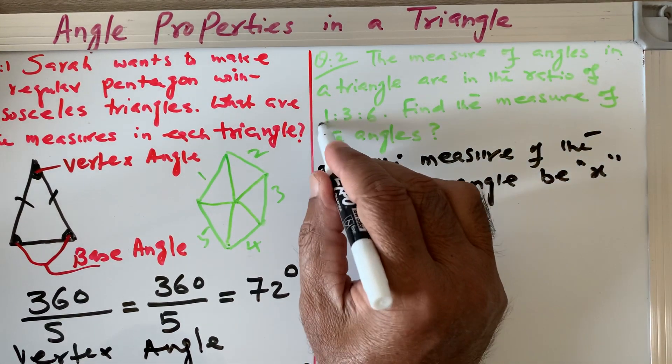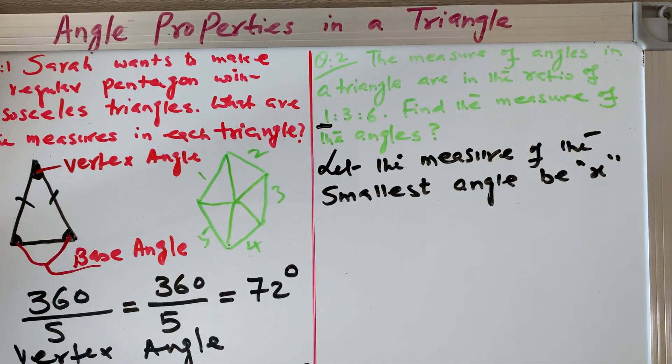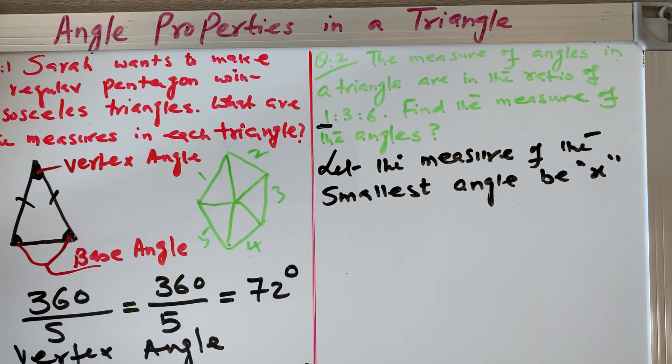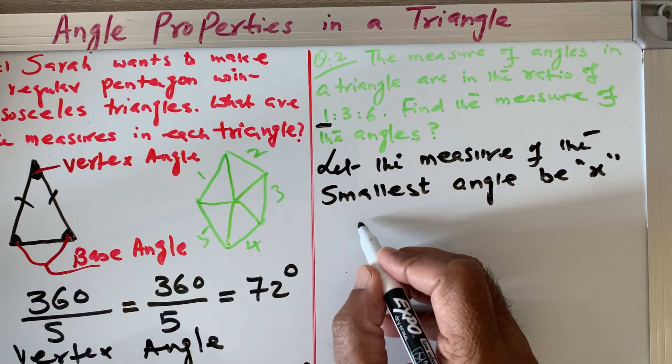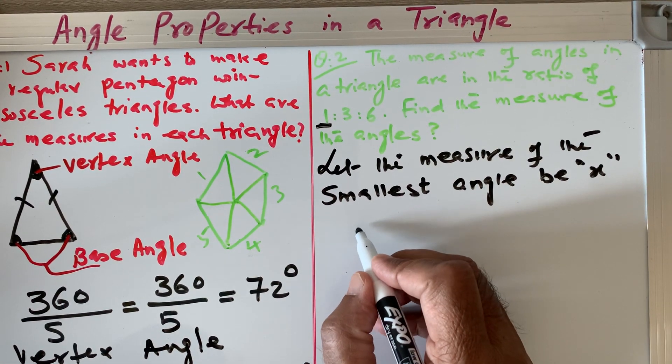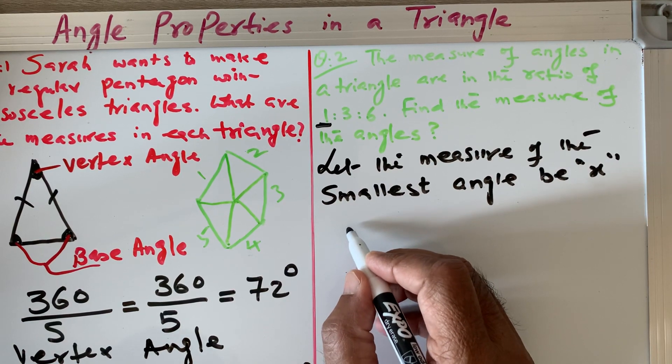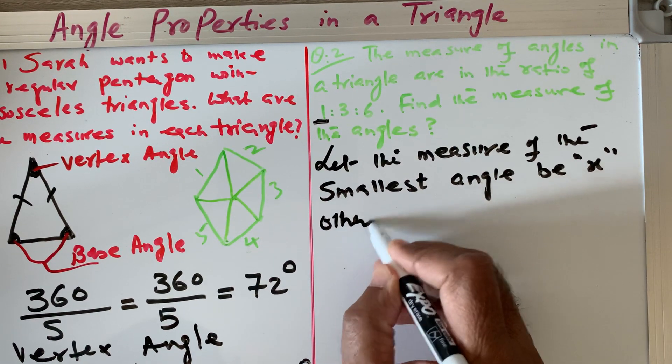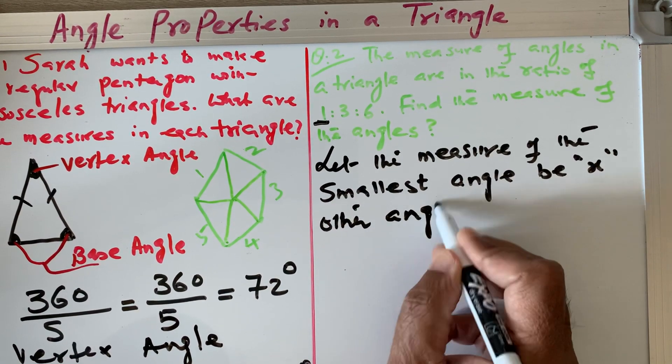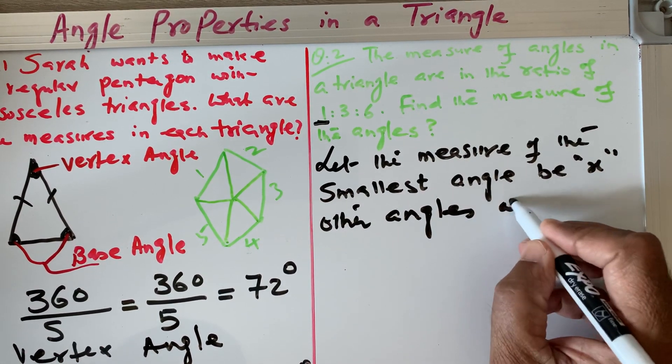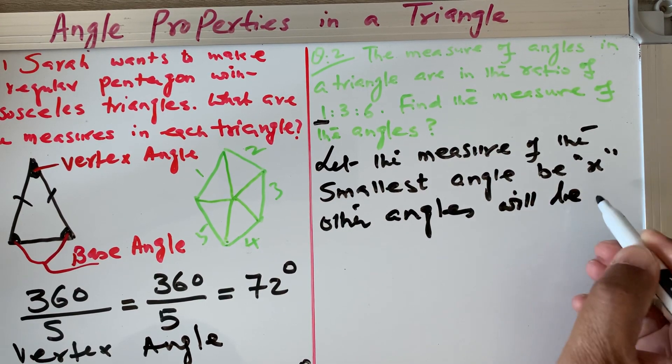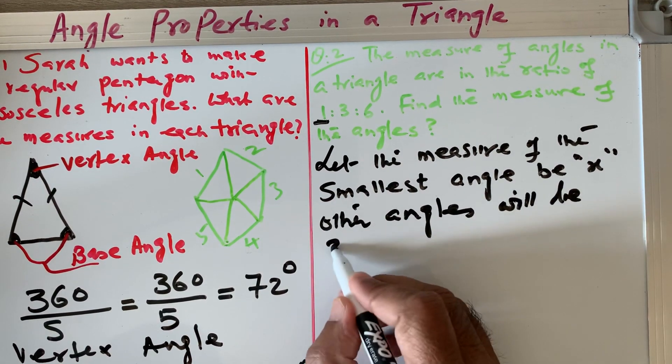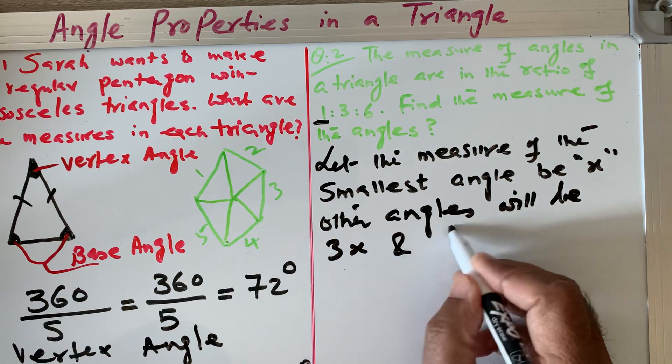So here we have to suppose the smallest angle be x. Let the measure of the smallest angle be x. So that is one ratio, the smallest. So we suppose that if 1 is x, then the other angles should be 3x and 6x because these are in a ratio.